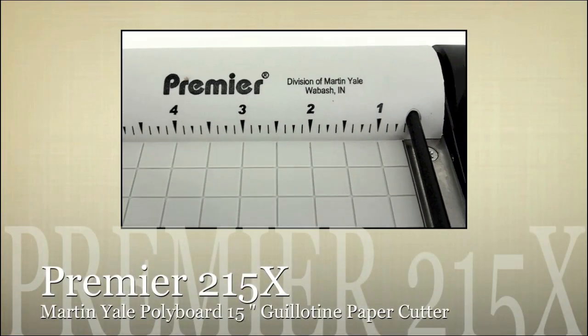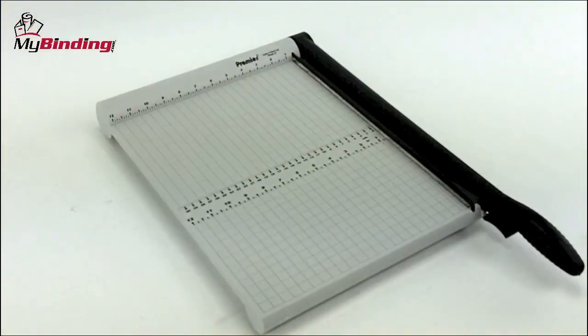Welcome to MyBinding video. Let's look at the Premier P215X, a polyboard 15-inch guillotine-style paper cutter by Martin Yale.